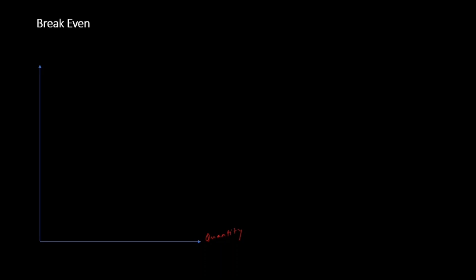This situation won't last long because high profits immediately attract new entrants, and the number of competitors rises quickly. I cannot sustain such a high price, so I have to keep reducing my price until I reach a point where price equals average total cost. Let's see how that happens on the graph.